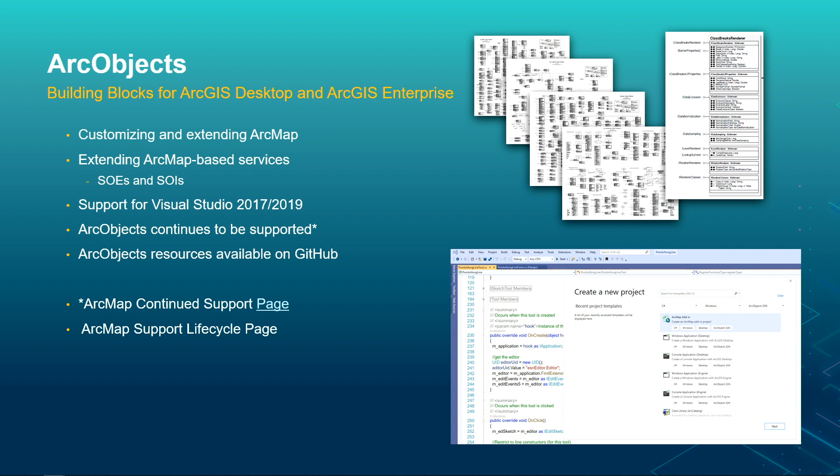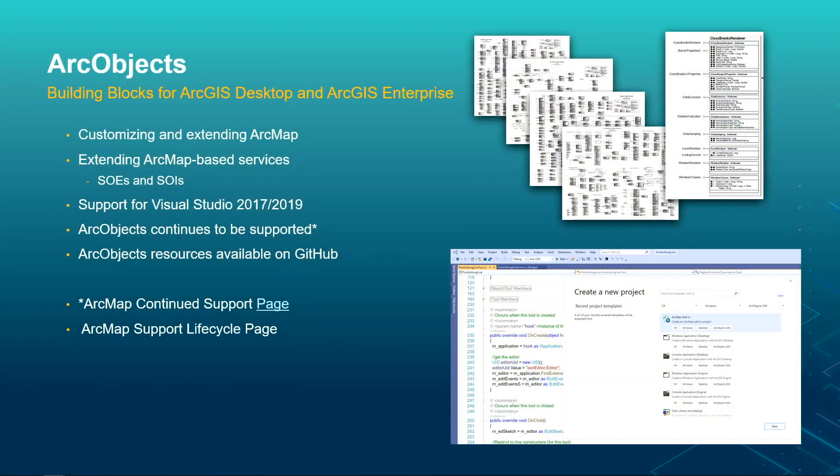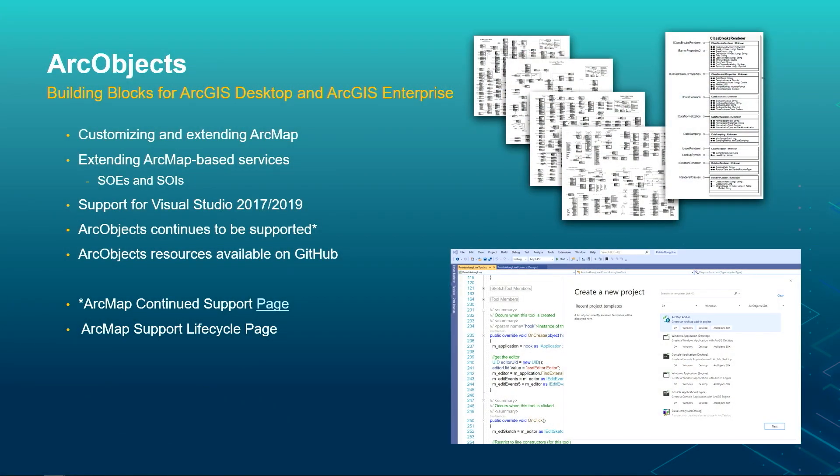There's a little asterisk there — we're going to come back to that. For several years, we've been encouraging you to migrate away from desktop development using the ArcObjects SDK. In 2020, we announced that we'll be maintaining ArcMap until March of 2026 — that's five years away, a pretty long time. All the details can be found in the ArcMap Continued Support page online. We don't have plans for future releases of ArcMap past the 10.8.x series, and we're at 10.8.1 right now.